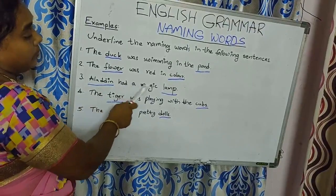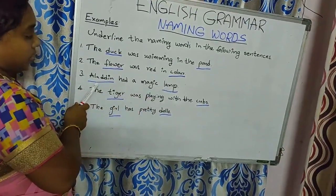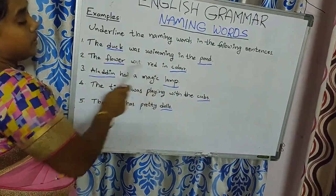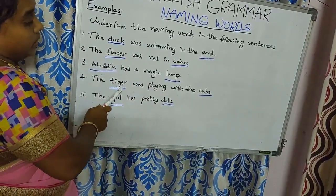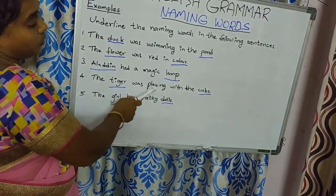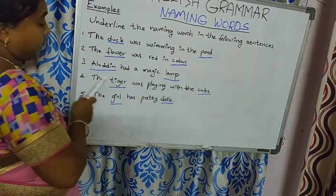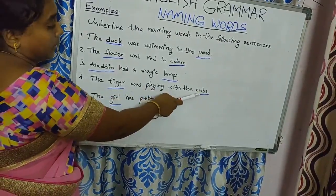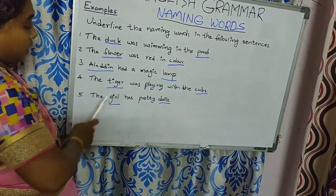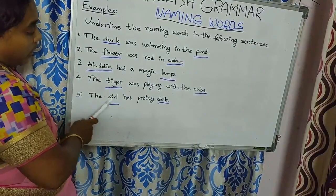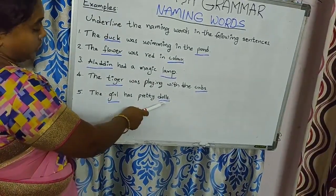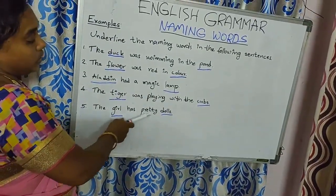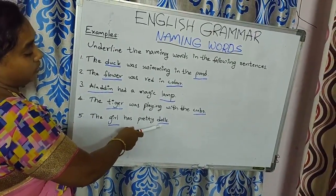Aladdin had a magic lamp. In this sentence, Aladdin and lamp are naming words. The tiger was playing with the cubs. In this sentence, tiger and cubs are naming words. The girl has pretty dolls. In this sentence, girls and dolls are naming words.